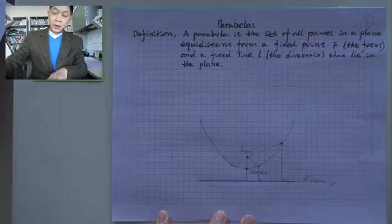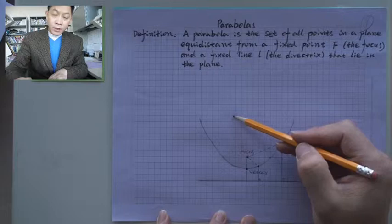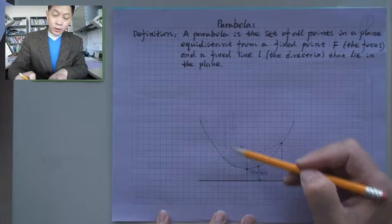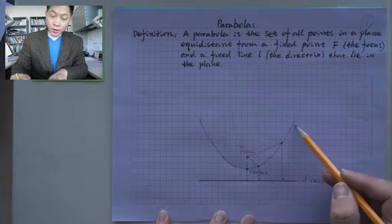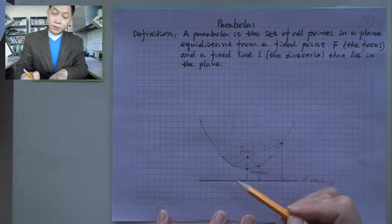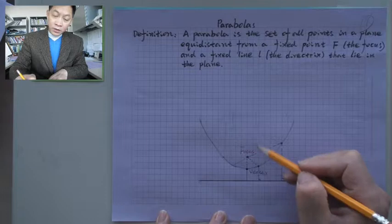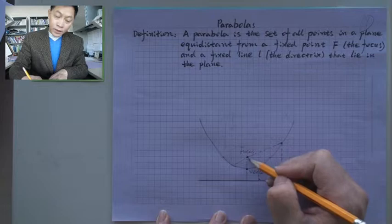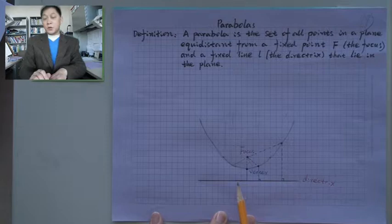The parabola has a very nice physical property. When light goes through perpendicular to the directrix and hits this mirror or dish, it reflects to the focus. The signal may hit the dish and reflect to the focal point — that's why we call it the focus or focal point.